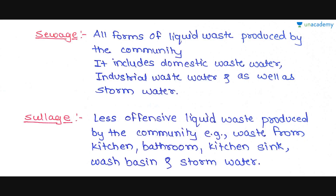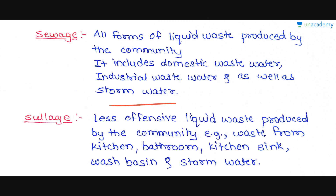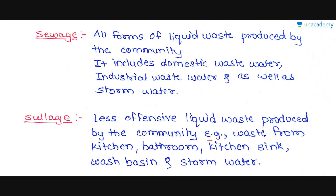Let's see some terms related to wastewater engineering. The first term is sewage — sewage is all forms of liquid waste produced by the community. It includes domestic wastewater, industrial wastewater, as well as storm water. Sewage in a narrower sense refers to the less offensive liquid waste produced by the community, for example waste from kitchens, bathrooms, kitchen sinks, and washbasins.